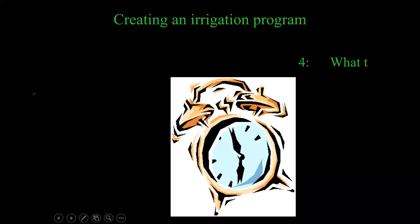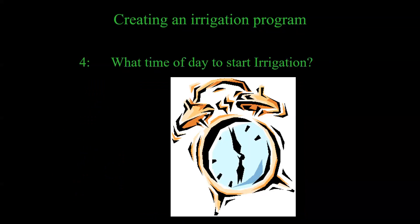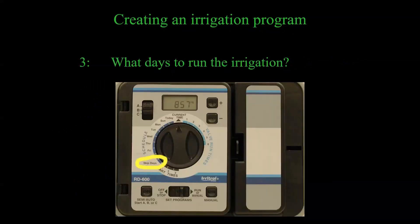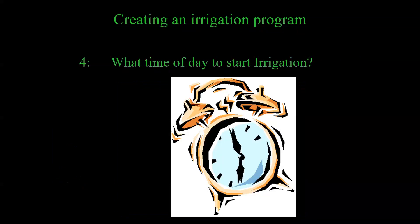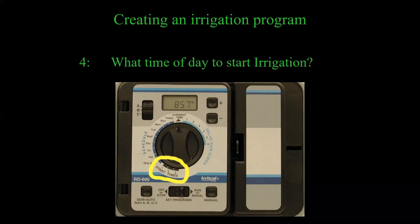The next thing the controller needs to know is what time of day to start irrigation. The controller asks this question for each individual program: Program A — are you a water day? Yes or no? Program B — are you a water day? And so on. On this controller you have start times 1, 2, and 3 at the bottom; on other controllers you use side arrow buttons to move between start times. Some controllers have 4 start times, which is even better. Important: the start times will start a complete cycle of all irrigation stations in that program — not individual stations.